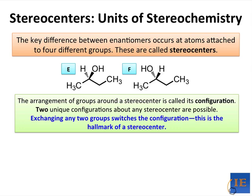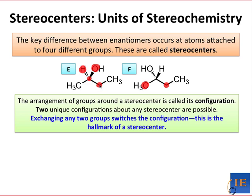We call this arrangement the configuration of the stereocenter, and two unique configurations are always possible. In E, we have one configuration where with the CH3 on the left and the CH2 on the right, the H is in the back and the OH is coming out. In F, we have what's called the opposite configuration where the CH3 and CH2 are still in the same positions as in E, but the OH is now in the back and the H in the front. You'll notice that if we exchange the H and the OH, then we can generate E from F.